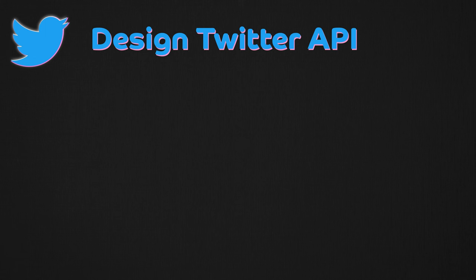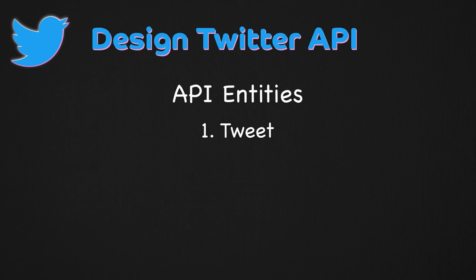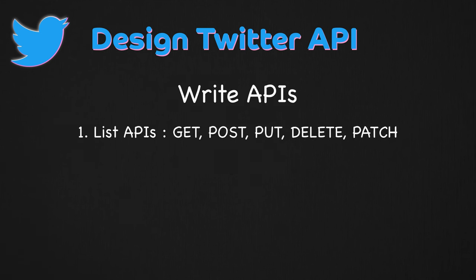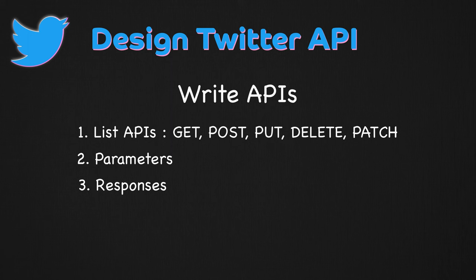In the solution phase, you are likely writing out the various entities the API relies on. For a Twitter API, for example, you will probably come up with a Tweet resource or entity and a User entity, defining what these resources look like and what properties or attributes they have. Once you have all that, you would write an outline of the various APIs you can think of, along with the various parameters and responses. You won't be implementing the API or writing logic — you are just outlining the API design with parameters, entities, and resources.